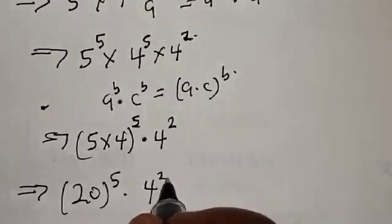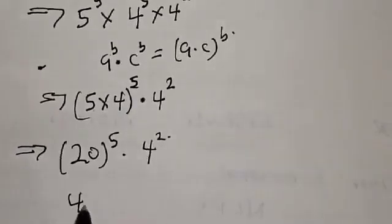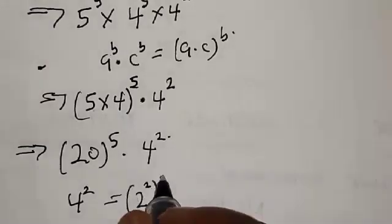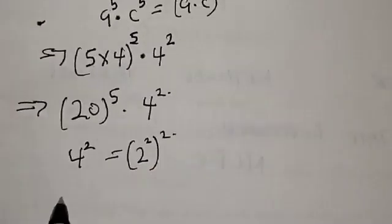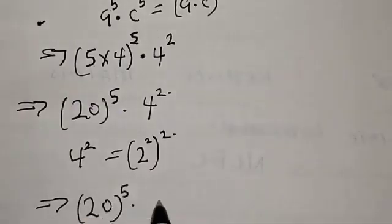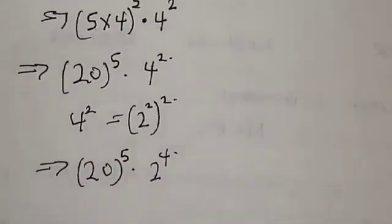Now 4 squared can be expressed as 2 raised to power 2, squared. This implies that we have 20 raised to power 5 multiplied by 2 raised to power 2 squared, which gives us 2 raised to power 4.